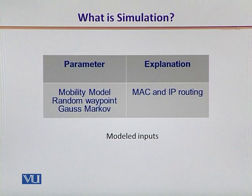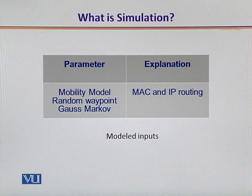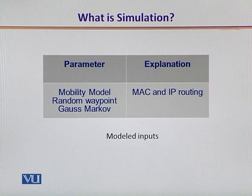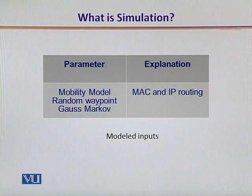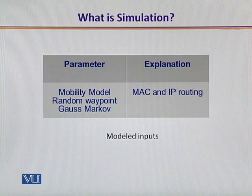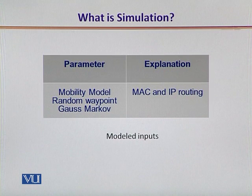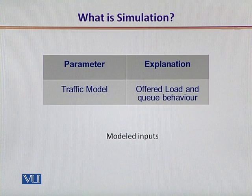The mobility model. Dear students, if you look at the performance of a communication channel that involves moving entities such as the wireless computers in this scenario, it is important to consider either the well-known random waypoint mobility model or the temporally dependent Gauss-Markov mobility model. These two will have a direct implication on the data link layer, the logical link control sublayer, and the IP routing layers.